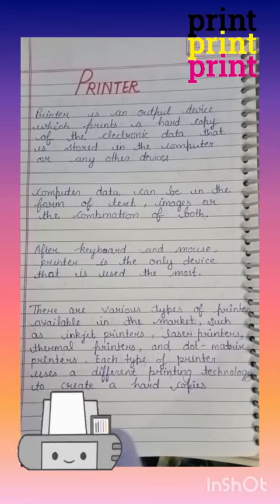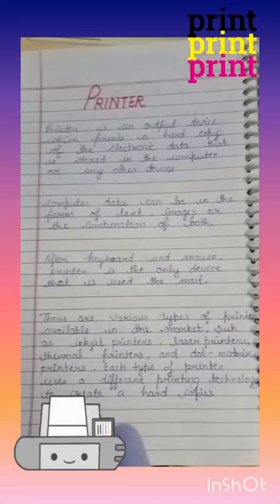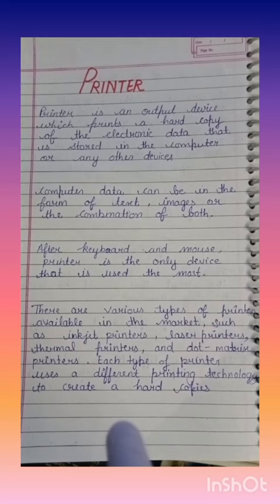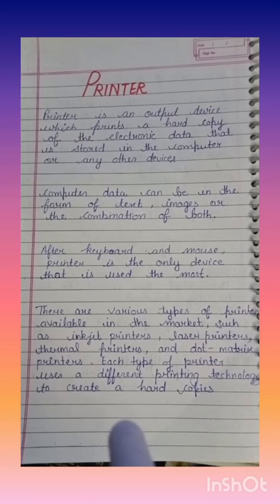Hello and welcome to this video on a printer. A printer is an output device which prints a hard copy of electronic data that is stored in the computer or any other device. Computer data can be in the form of text, images, or the combining of both.